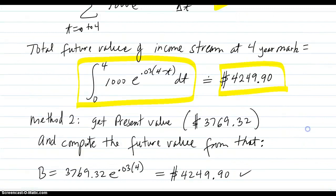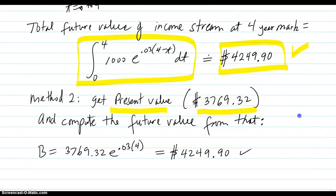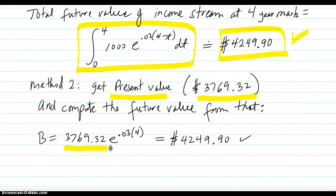Method two, to get that same number, instead of going for the future value first, what you do is you get the present value first, and that going through the calculus ended up being this number, and then you put that in the algebra two formula for the balance after the four years of putting in this present value principle to accumulate it up in four years. Work that out, and you get exactly the same thing as you got here. So that's just another way to do it. Of course, you have to get the present value first, so there is an amount of work there.